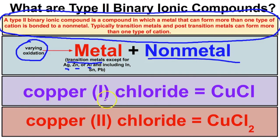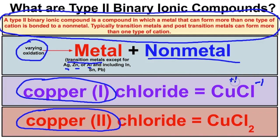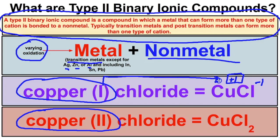For example, we have copper 1 chloride and copper 2 chloride. The difference has everything to do with the ion that the copper atom forms. Chloride has a negative 1 charge, so copper must carry a positive 1 charge. When we write the name, this charge turns into a Roman numeral capital I in parentheses to denote the copper ion with the positive 1 charge.